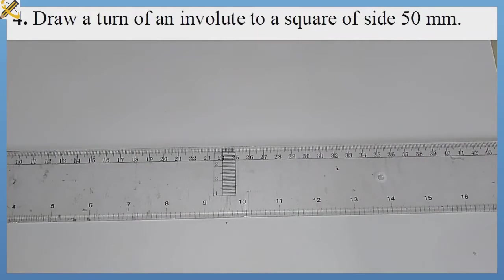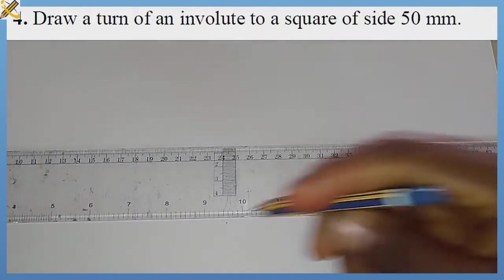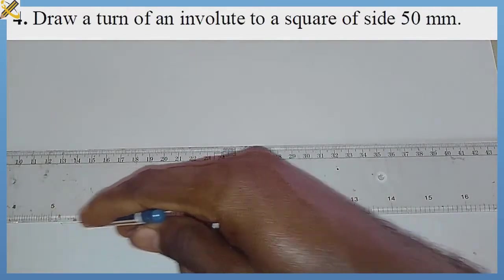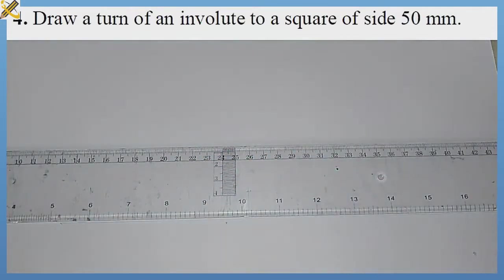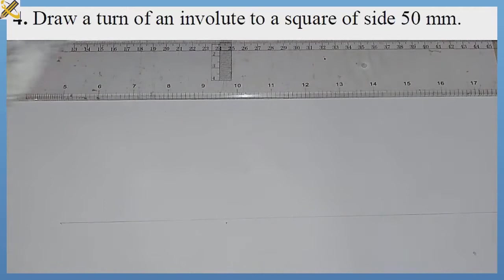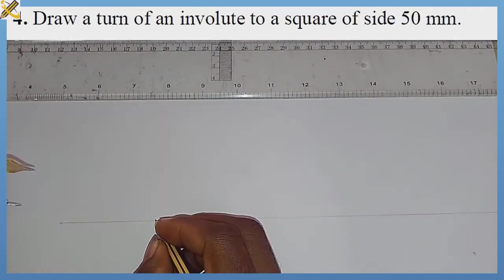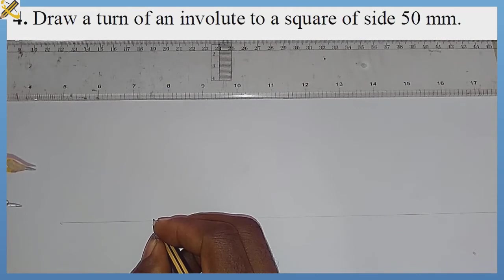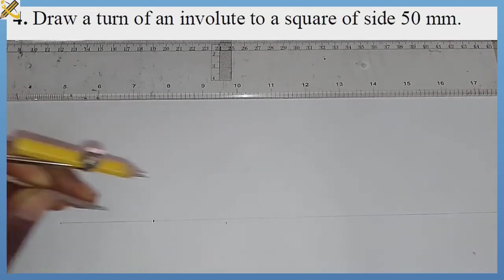To construct the involute of a square with side 50 mm, the first thing is to produce an original line in this manner. Then pick your compass, measure 50 mm, and mark it right here.